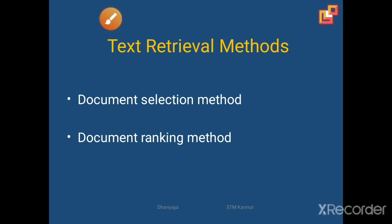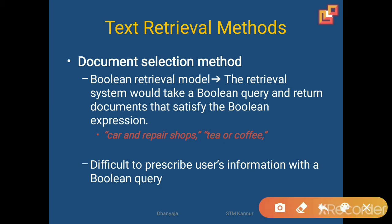In the case of document selection method, we are using a model called the Boolean retrieval model. In the case of a Boolean retrieval system, we will give a Boolean query and return the document that satisfies the Boolean expression. For example, expressions like 'car AND repair shops' or 'tea OR coffee'. We will search and get the documents satisfying these Boolean queries. The main problem with this method is it is very difficult to prescribe a user's information needs with a Boolean query.